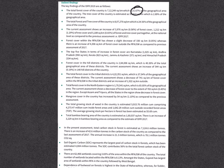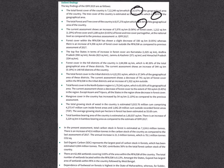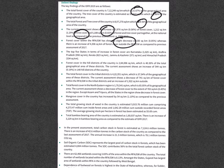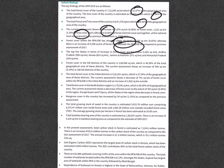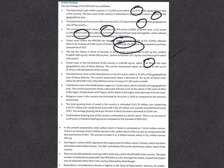Key findings of the India State of Forest Report 2019: Total forest cover is at 21.67% and tree cover is at 2.89% of the total geographical area; together they constitute 24.56%. Compared to 2017, there is an overall increase in forest and tree cover. However, forest cover within recorded forest areas has shown a slight decrease, while forest cover outside recorded forest areas has increased. Top five states in terms of increase in forest areas are Karnataka, Andhra Pradesh, Kerala, Jammu & Kashmir, and Himachal Pradesh. Forest cover in hill districts is 2,084,000 sq km, about 40.30% of the total geographical area of those districts.